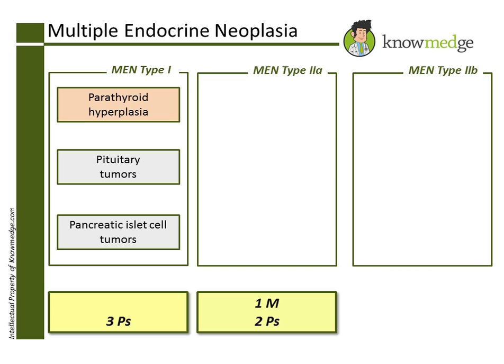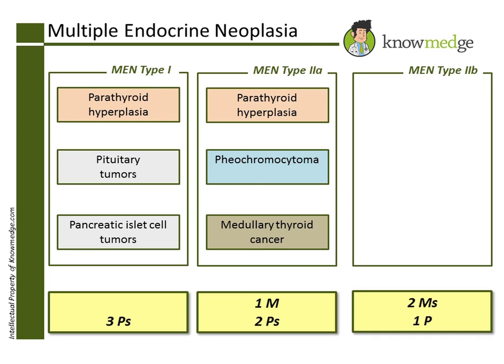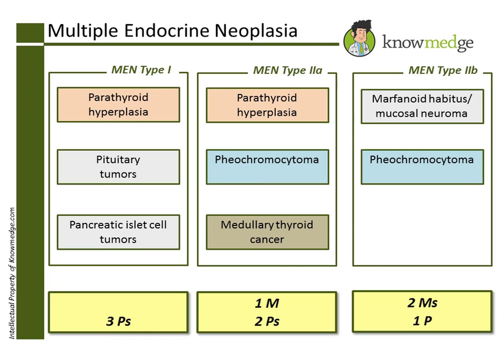With MEN type IIa, we have one M and two Ps: parathyroid hyperplasia, pheochromocytoma, and medullary thyroid carcinoma. MEN type IIb has two Ms and one P: marfanoid habitus or mucosal neuroma, pheochromocytoma, and medullary thyroid carcinoma.